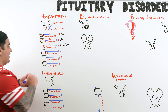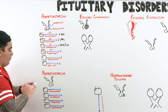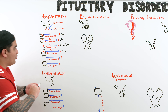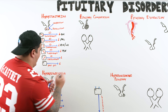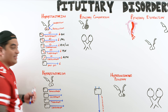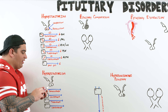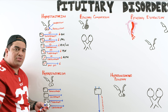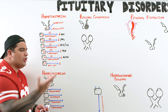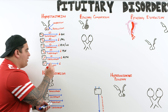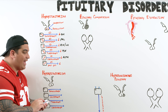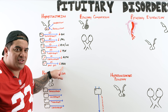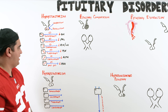Loss of FSH and LH leads to hypogonadism. If the thyrotrophs are damaged, they lose the ability to produce TSH, resulting in secondary hypothyroidism. If corticotrophs are damaged, they lose ACTH production, leading to secondary adrenal insufficiency. If destruction extends to the posterior pituitary, specifically the supraoptic nucleus, you lose vasopressin (ADH), leading to central diabetes insipidus.